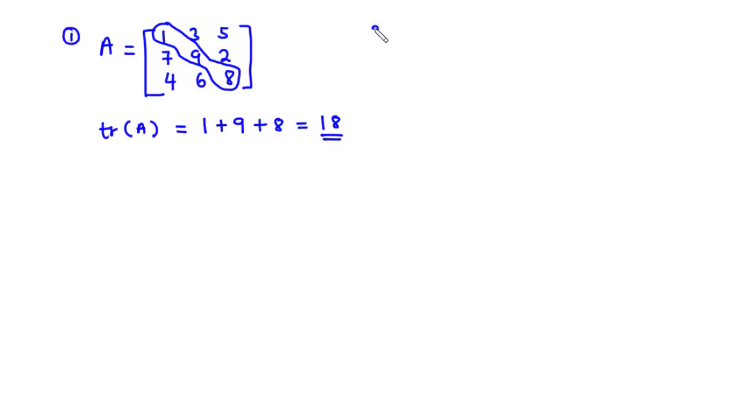Now let's try another example. Let's assume that we have B to be a 2 by 2 matrix containing elements 2, 1, 0, 3. Let's try to find the trace of this matrix.